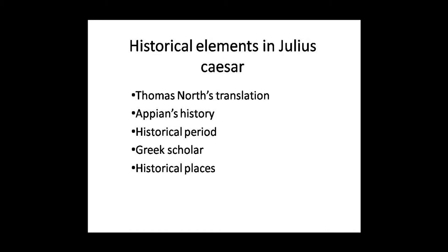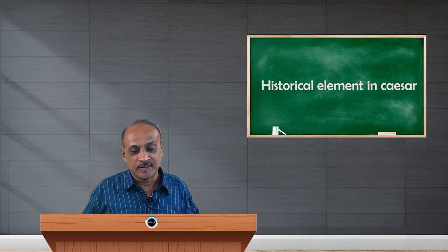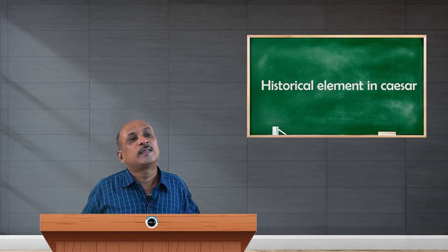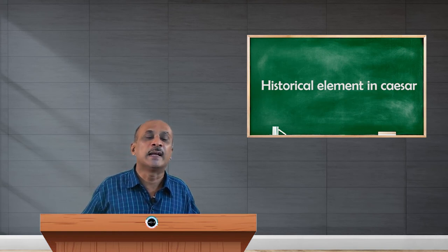Another historical character we see on the stage is Artemidorus, a Greek scholar who appears briefly in one of the shortest scenes of the play, giving an indirect warning to Julius Caesar about the danger he is going to face. This Greek scholar's warning to Caesar is a significant account that happened in real life.